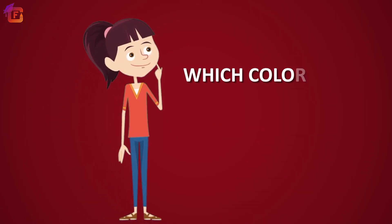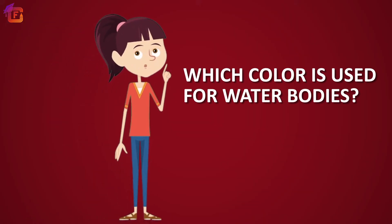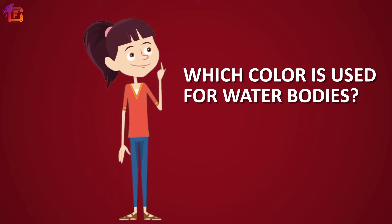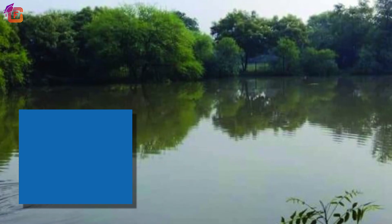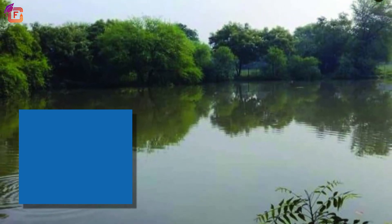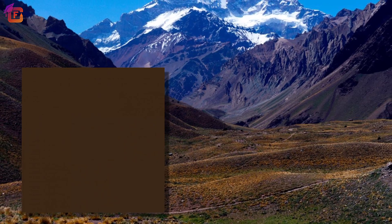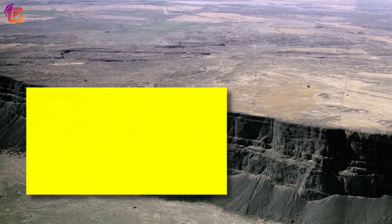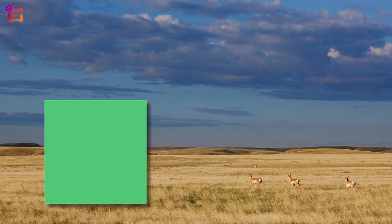Blue is used to indicate water bodies, brown for mountains, yellow for plateaus and green for plains. Different colors are used for this same reason.